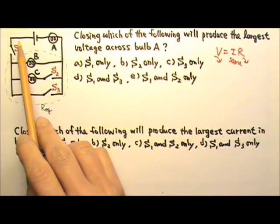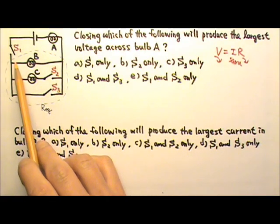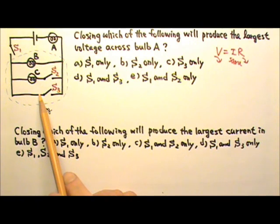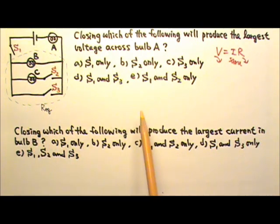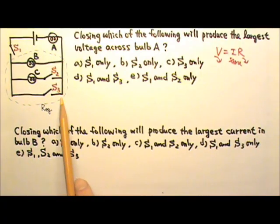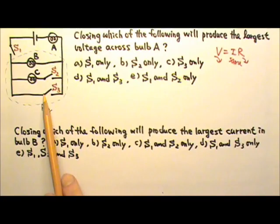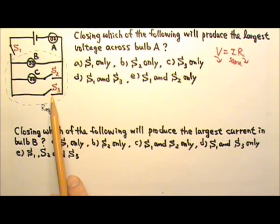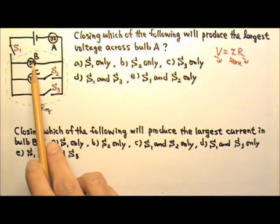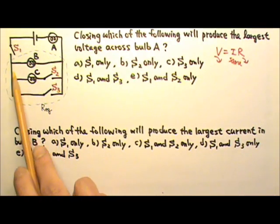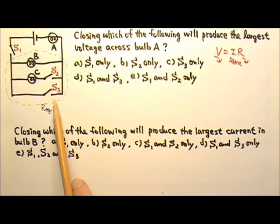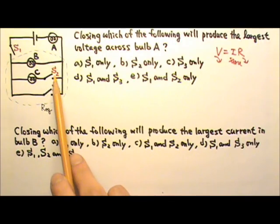So we should close both S2 and S3. And of course, S1 also has to be closed. Otherwise, no bulb will get any voltage. However, there is no answer choice for S1, S2, and S3. But that's okay, because we happen to have no resistance at all over here when S3 is closed. Which means closing S3 shorts these two segments, making the equivalent resistance for this part zero, whether S2 is closed or not.